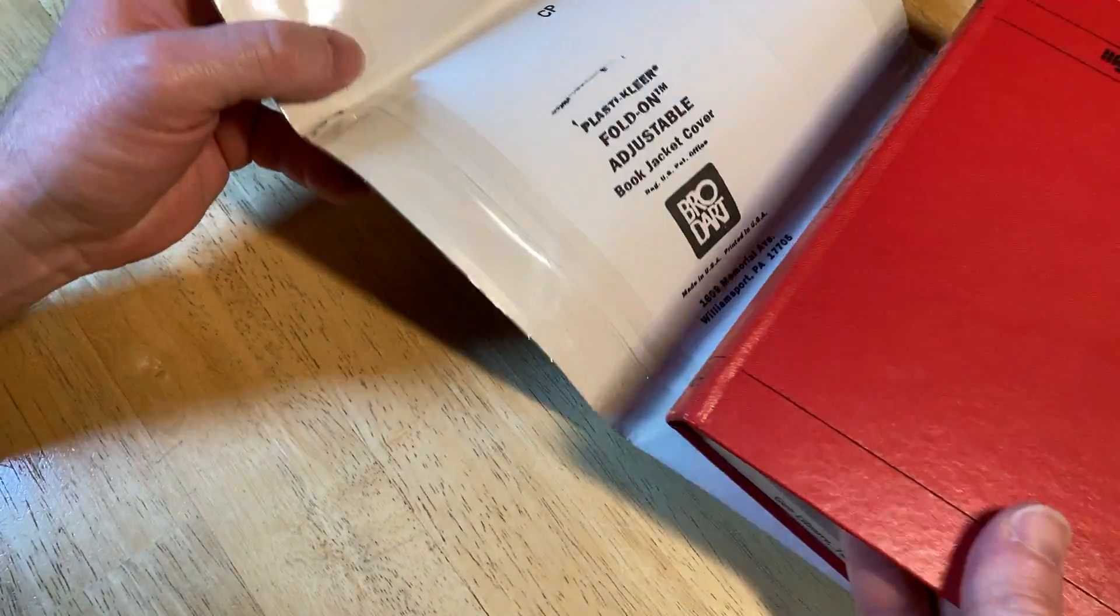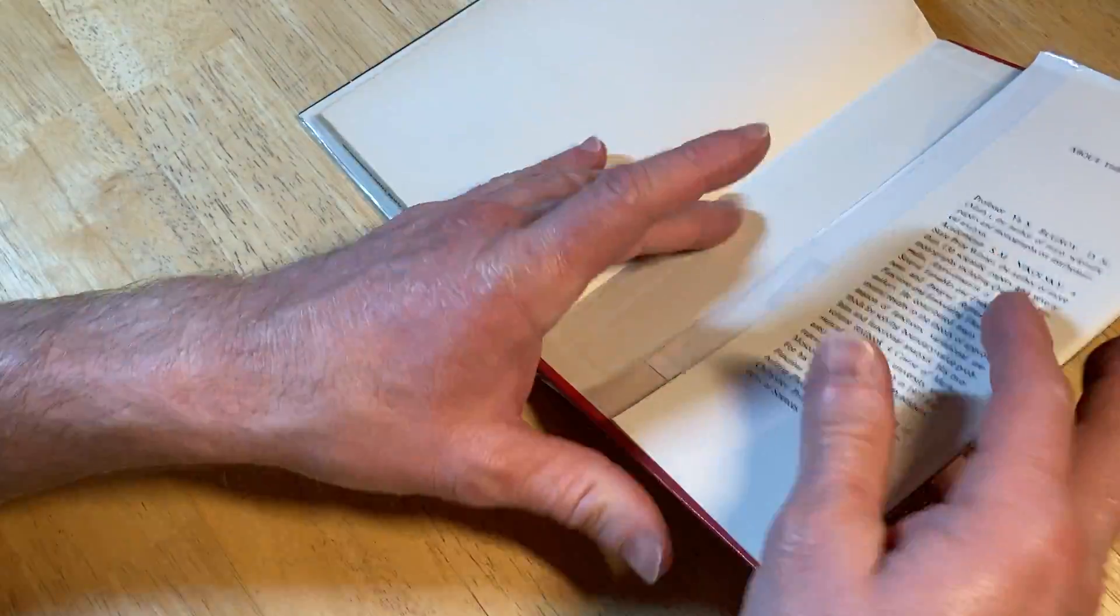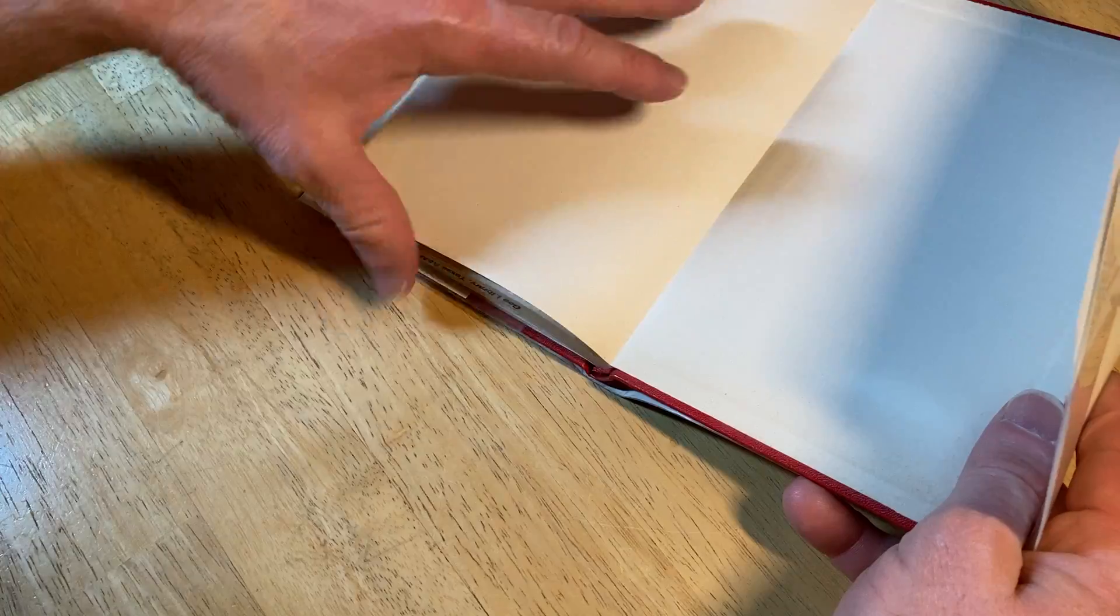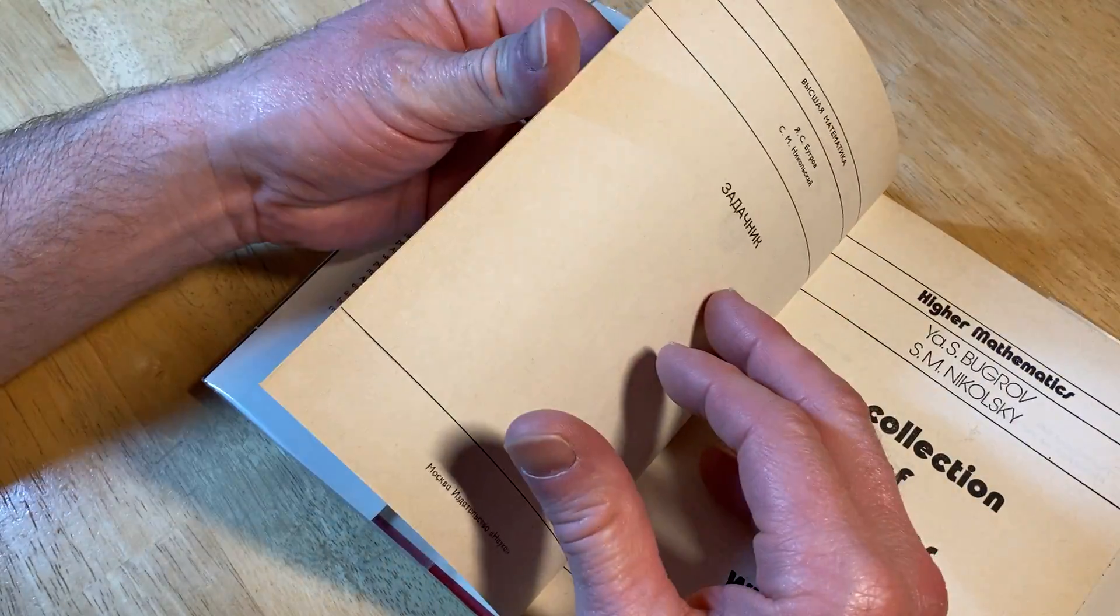Let's take the dust jacket off so you can see what it looks like there. And let's see if it has any, you know, like when people check it out, like where you put the library card, but I don't see that anywhere. Sometimes you can see who checked it out and stuff. It's kind of fun.